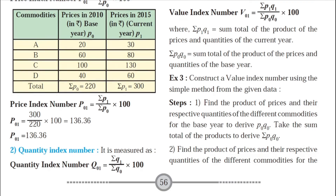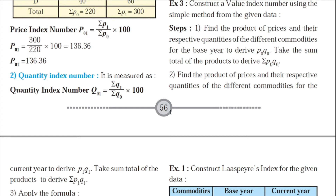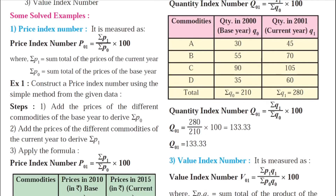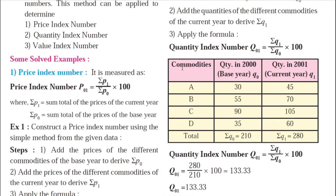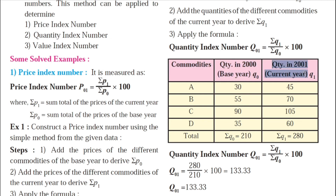In a similar way, we have a formula for quantity index number as well. Quantity index number = (ΣQ1 / ΣQ0) × 100 — the P is simply replaced by Q, price replaced by quantity. Here we have a sum with commodities, quantity in 2000 (base year, Q0) and quantity in 2001 (current year, Q1). The quantities are: Commodity A — 30 in 2000 and 45 in 2001; Commodity B — 55 and 70; Commodity C — 90 and 105.